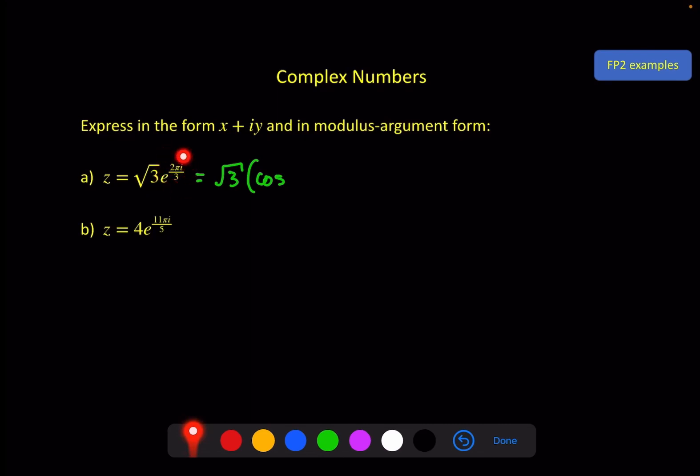And the exponential gives me r and theta to write modulus argument form straight away. So I would do modulus argument first which gives us root 3 cosine of theta and we can see what theta is in here because we know this is iθ so if we ignore the i for a second theta is 2π over 3. So we've got 2π over 3 plus i sine the same 2π over 3.